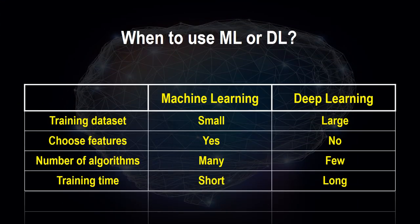When to use ML or DL: if your training dataset is small, use machine learning; if large, use deep learning. If you want to choose your features, go for machine learning; if not, go for deep learning. Machine learning offers a wider choice of algorithms, while deep learning has fewer choices. Training time is short for machine learning but large for deep learning. The advantage of deep learning is much higher accuracy and no need to extract features manually.